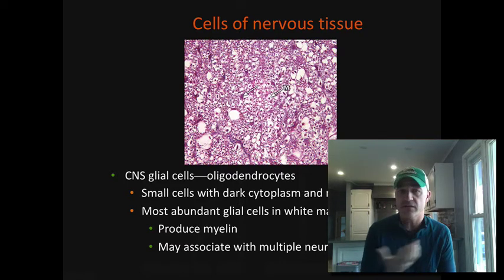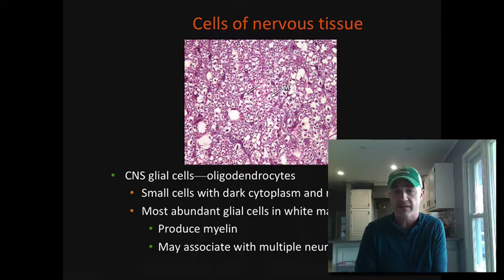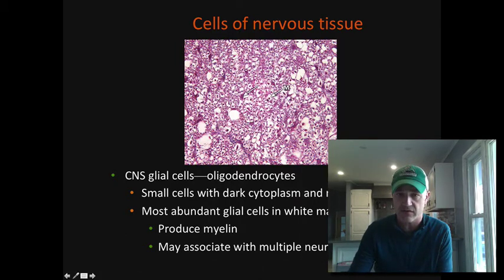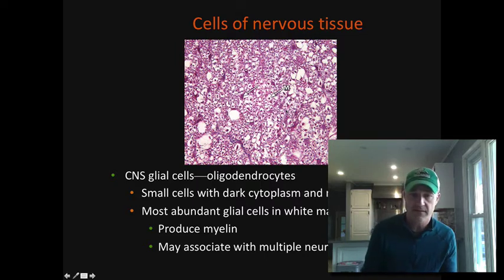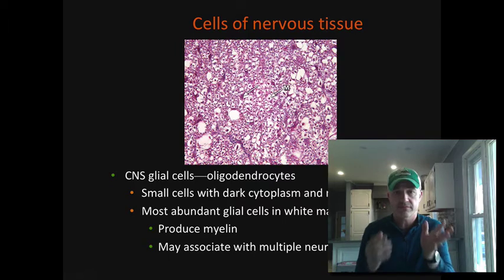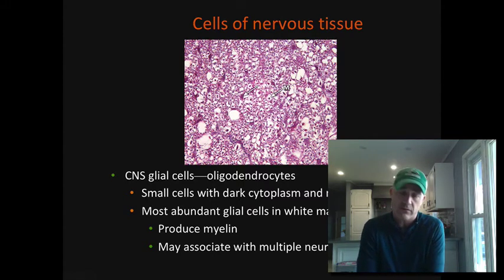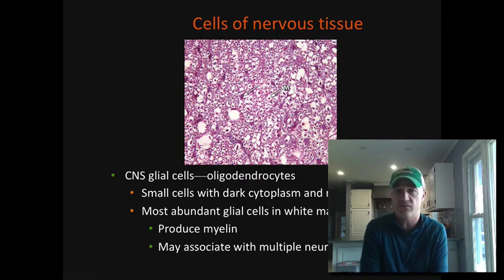Looking at oligodendrocytes — these are really tough to see because the main thing making them up is myelin, which is a lipid, and lipids don't stain well. In the CNS, where the M is pointing to, that is the myelin — you can see there's nothing staining there. You can see the axon in the center and the myelin surrounding it; that would be part of an oligodendrocyte. These can associate with a number of different axons at once. Oligodendrocytes are not able to help retarget an axon if it's damaged, which is part of the reason spinal cord damage is generally considered to be permanent.